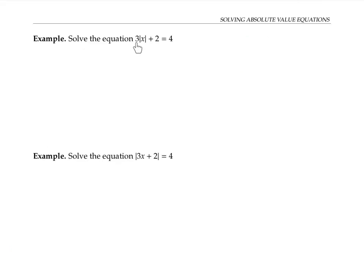Let's start with the equation 3|x| + 2 = 4. I'd like to isolate the absolute value part of the equation. I can do this by starting with my original equation, subtracting two from both sides, and dividing both sides by three.